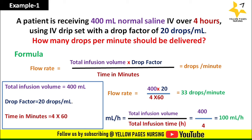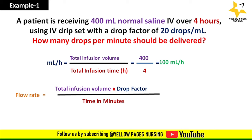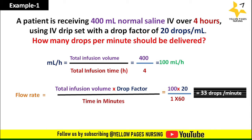Clinically, when infusing, we can first calculate ml per hour as discussed. Using the same example, ml per hour is 100 ml per hour. With this data we can then calculate the flow rate using the same formula, which again gives 33 drops per minute — the same answer.